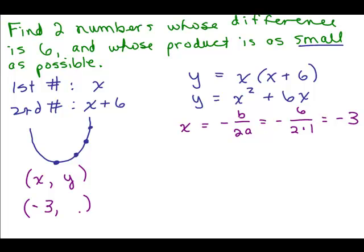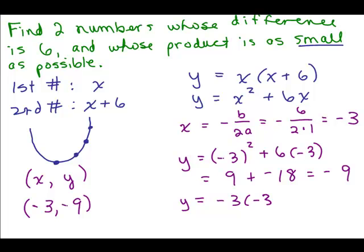Now how would we figure out what y is? We would plug negative 3 into the equation. It doesn't matter if you do it x times x plus 6 or if you do it y equals x squared plus 6x. How about we do it as x squared plus 6x? So I'd put in negative 3 for x. That gives you 9 plus negative 18 which is negative 9. So the y value of this ordered pair is negative 9. If you'd put it in the first equation instead, you would have put in negative 3 for x and then wrote negative 3 plus 6 and that's negative 3 times 3 which also equals negative 9. It doesn't really matter.